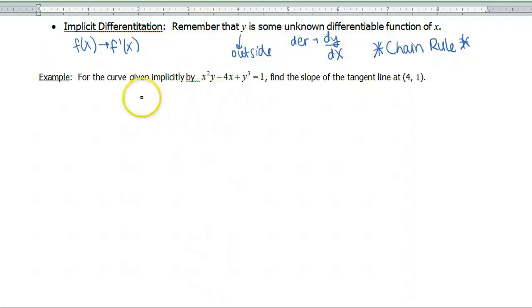So instead we're gonna go ahead and do implicit differentiation. So what that says is we want to do the derivative of both sides with respect to x. So while I'm writing all of this out, I want you to be thinking about how can I do the derivative of these pieces with respect to x, because that's gonna be our next thing here.